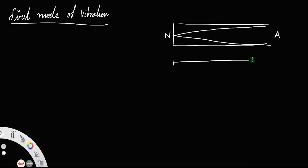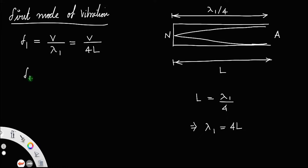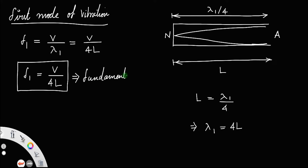This is the length of the pipe L. The distance between a node and an antinode is always lambda by 4. So for the first mode, L equals lambda 1 by 4, which implies lambda 1 equals 4L. The frequency f1 equals velocity divided by wavelength lambda 1, which gives f1 equal to v divided by 4L. This is the minimum or lowest frequency available — it is called the fundamental frequency.